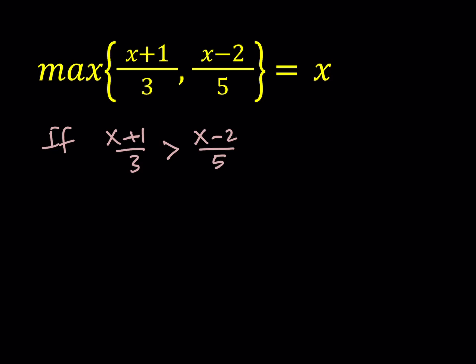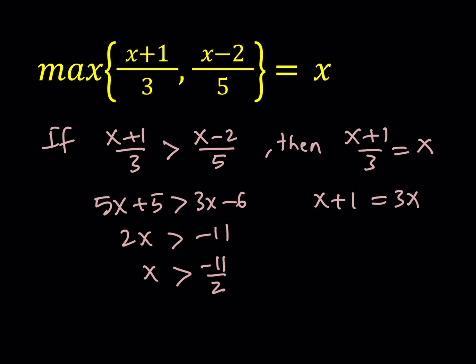So this implies that x plus 1 over 3 is going to be equal to x because that's our result. So let's go ahead and solve this inequality and the equation and see if they match up. I'm going to cross multiply here because 3 and 5 are positive quantities. 5x plus 5 is greater than 3x minus 6. Subtracting, I get 2x is greater than negative 11 and x is greater than negative 11 halves. So if my x is greater than negative 11 halves, then x should take that value. Let's go ahead and find that value. x plus 1 is equal to 3x and then 2x is equal to 1 and this means x is equal to 1 half.